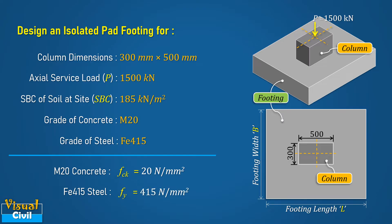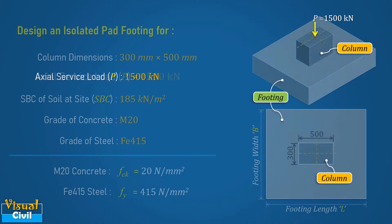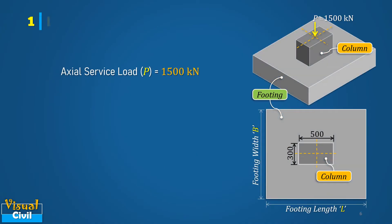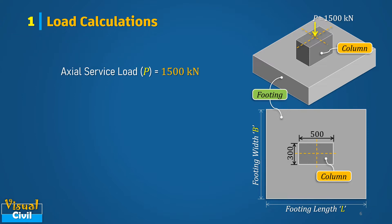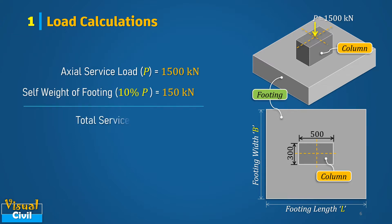The footing will be designed for the total service load, which includes the self-weight of the footing. Hence, assume the self-weight of the footing equal to 10 percent of axial service load transferred from the column. Hence, total service load is equal to 1650 kilonewton.